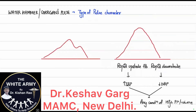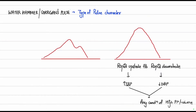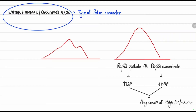Hello everyone. In this video we'll be discussing some important concepts of cardiovascular system examination which are usually confusing and difficult to understand. First, we'll be discussing water hammer pulse, also called Corrigan's pulse. It is a type of pulse character; the remaining pulse characters we have already discussed in the pulse series.